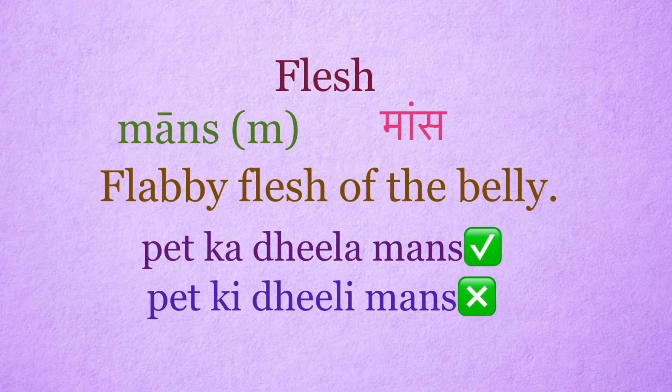Flesh: maans. It's a masculine word. Flabby flesh of the belly: right use is peet ka dhila maans. Wrong use: peet ki dhili maans.